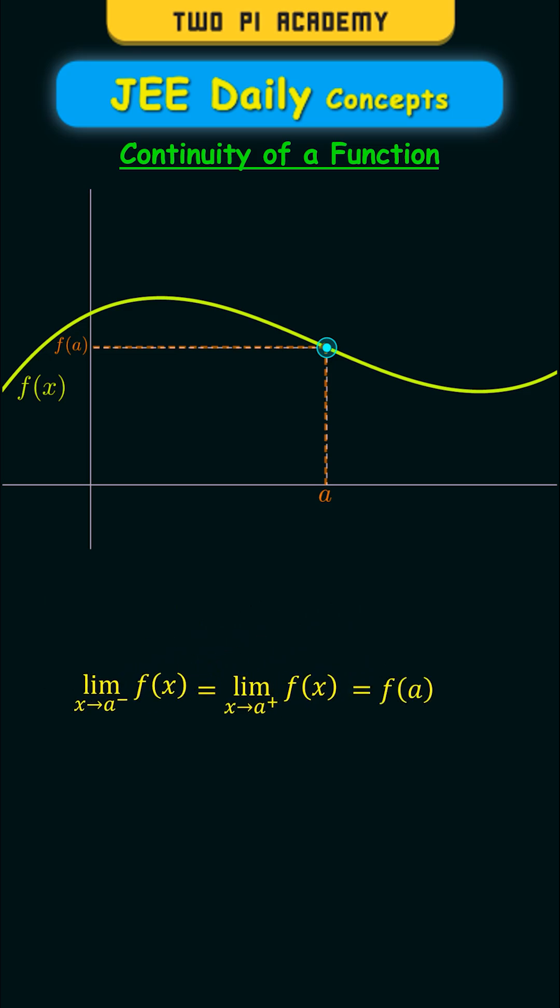And if both of these limits and f of a are all equal to each other, then the function is said to be continuous at x equals a.